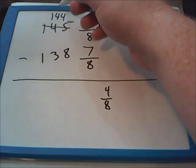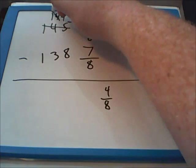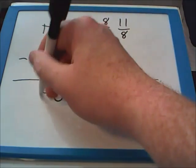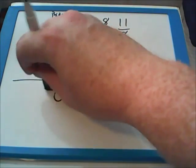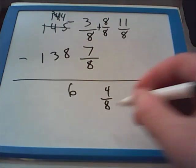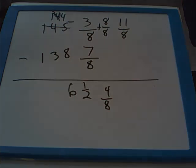That will leave 4/8. We will go back and do the whole numbers: 144 minus 138. We will have to borrow some more. And we get 6 and 4/8. But remember that 4/8 can be reduced down to 1/2. So the final answer here is 6 and a half pounds.